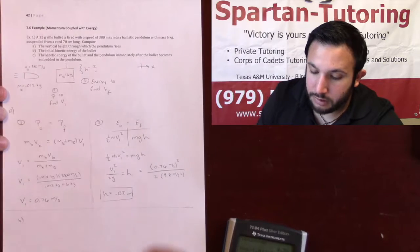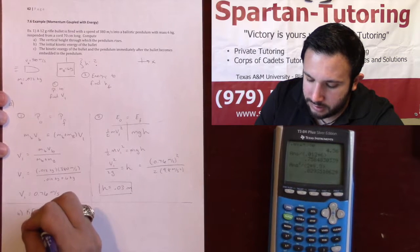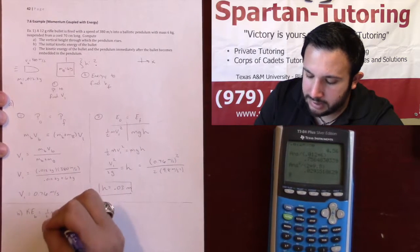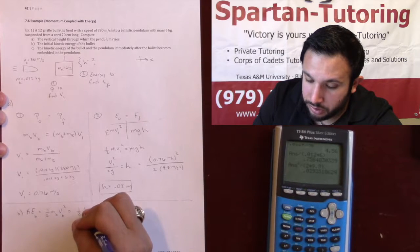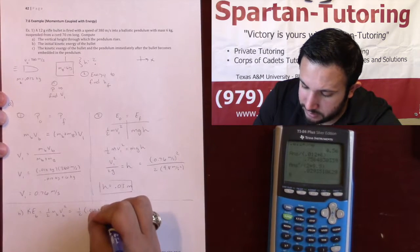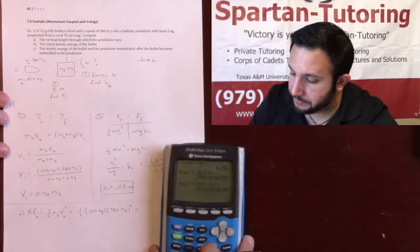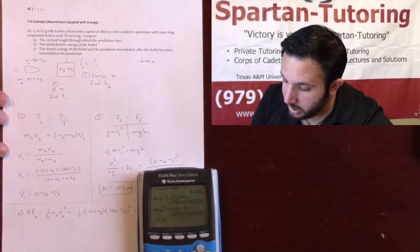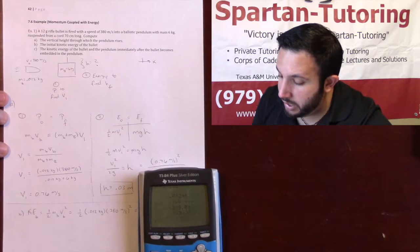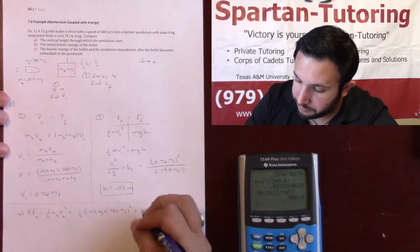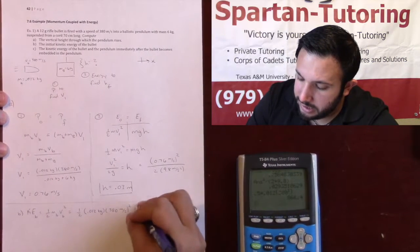Part b. What's the initial kinetic energy of the bullet? Well, we know what kinetic energy is. Kinetic energy of the bullet is going to be one-half times the mass of the bullet, times the velocity of the bullet squared. Which will be one-half times the mass of the bullet was 0.012 kilograms. The velocity was 380 meters per second. We're going to square that. And so we're going to go one-half times 0.012 times the 380 squared. And what we get is 866.4 joules. So we get 866.4 joules is equal to the initial kinetic energy of the bullet.